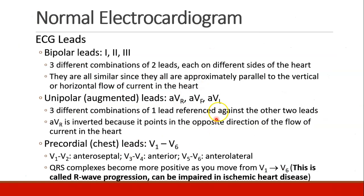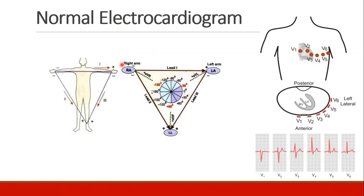Which of these leads do we normally see in the operating room? It's usually one of the bipolar leads — typically lead 1 or lead 2. Lead 2 is often the best choice because it best shows the axis of movement from right to left and up to down.